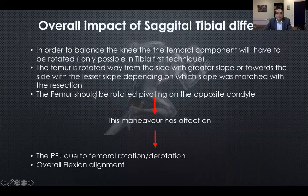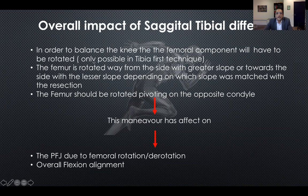The overall impact of sagittal tibial difference in posterior slope is that to balance the knee, the femoral component will need to be rotated — only possible with a tibia-first technique. The femur is rotated away from the side with greater slope or toward the side with lesser slope, depending on which slope was matched with the resection, pivoting on the opposite condyle. Importantly, this maneuver affects the patellofemoral joint due to femoral rotation and derotation and the overall flexion alignment.